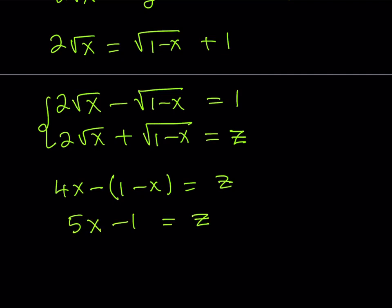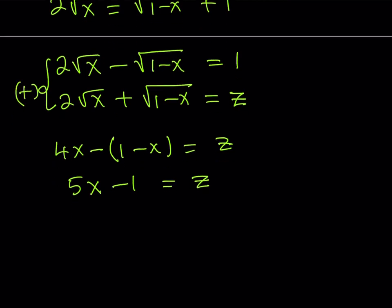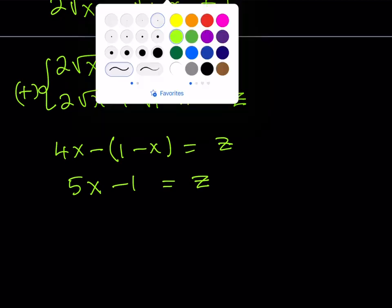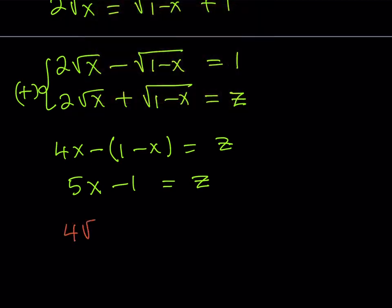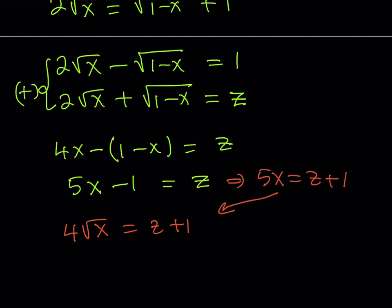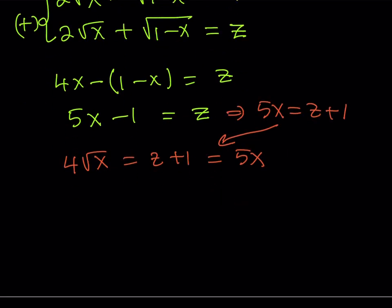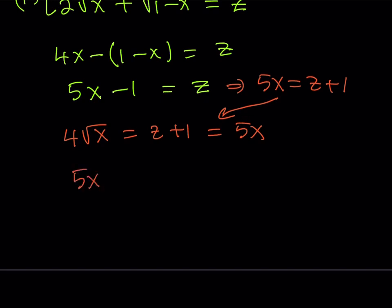If we add these equations now, just like before, we'll get rid of the second one, and this gives us 4 times the square root of x equals z plus 1. Notice that z plus 1 can be written as 5x from the previous result, so 5x equals z plus 1, and we substitute that in. The conclusion is a much simpler radical equation: 5x is equal to 4 times the square root of x.